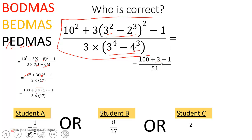Then we add 100, and 100 plus 3 will give you 103 minus 1 is 102 over 51. Then that will give us 2, so this student is correct.